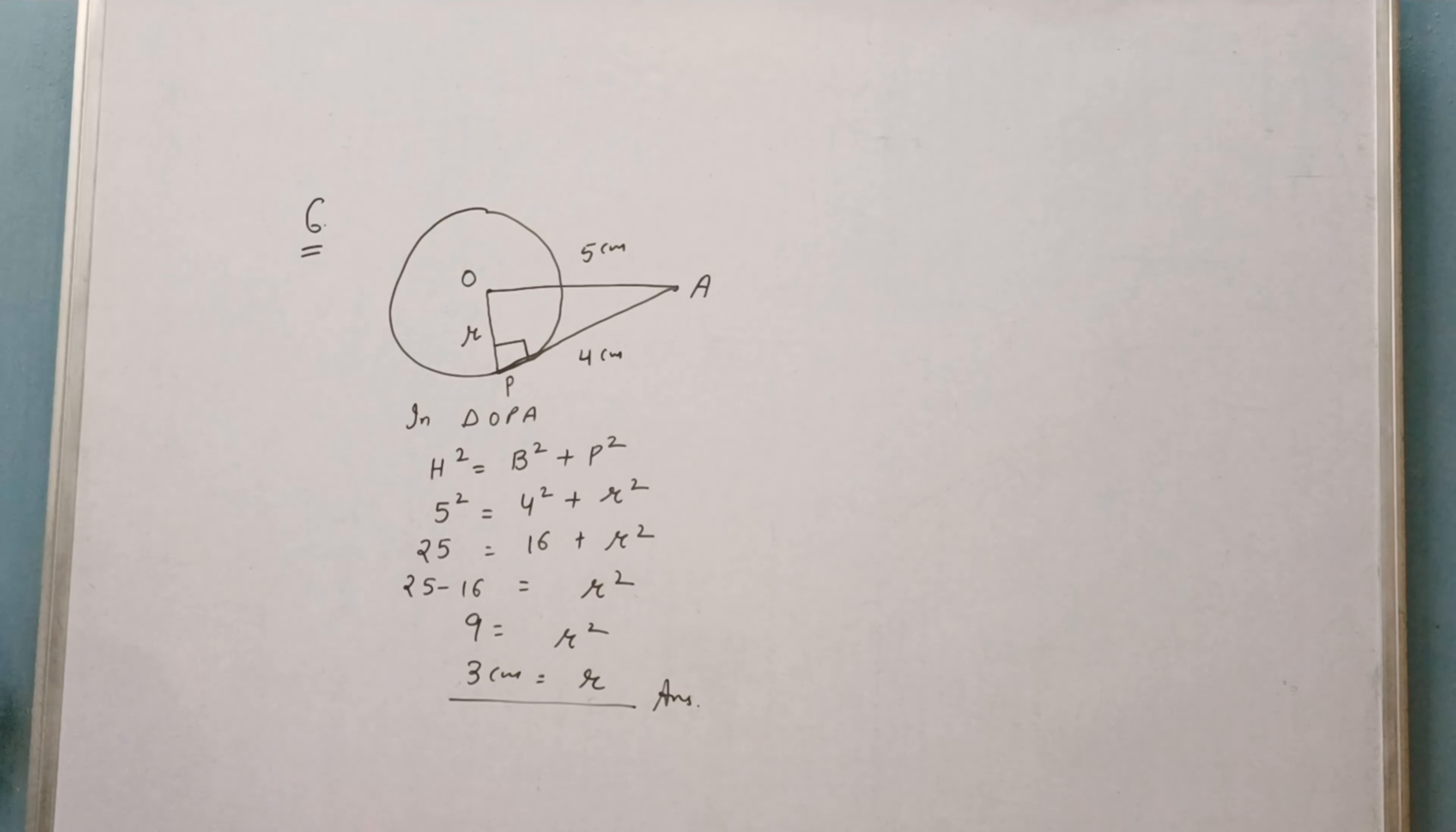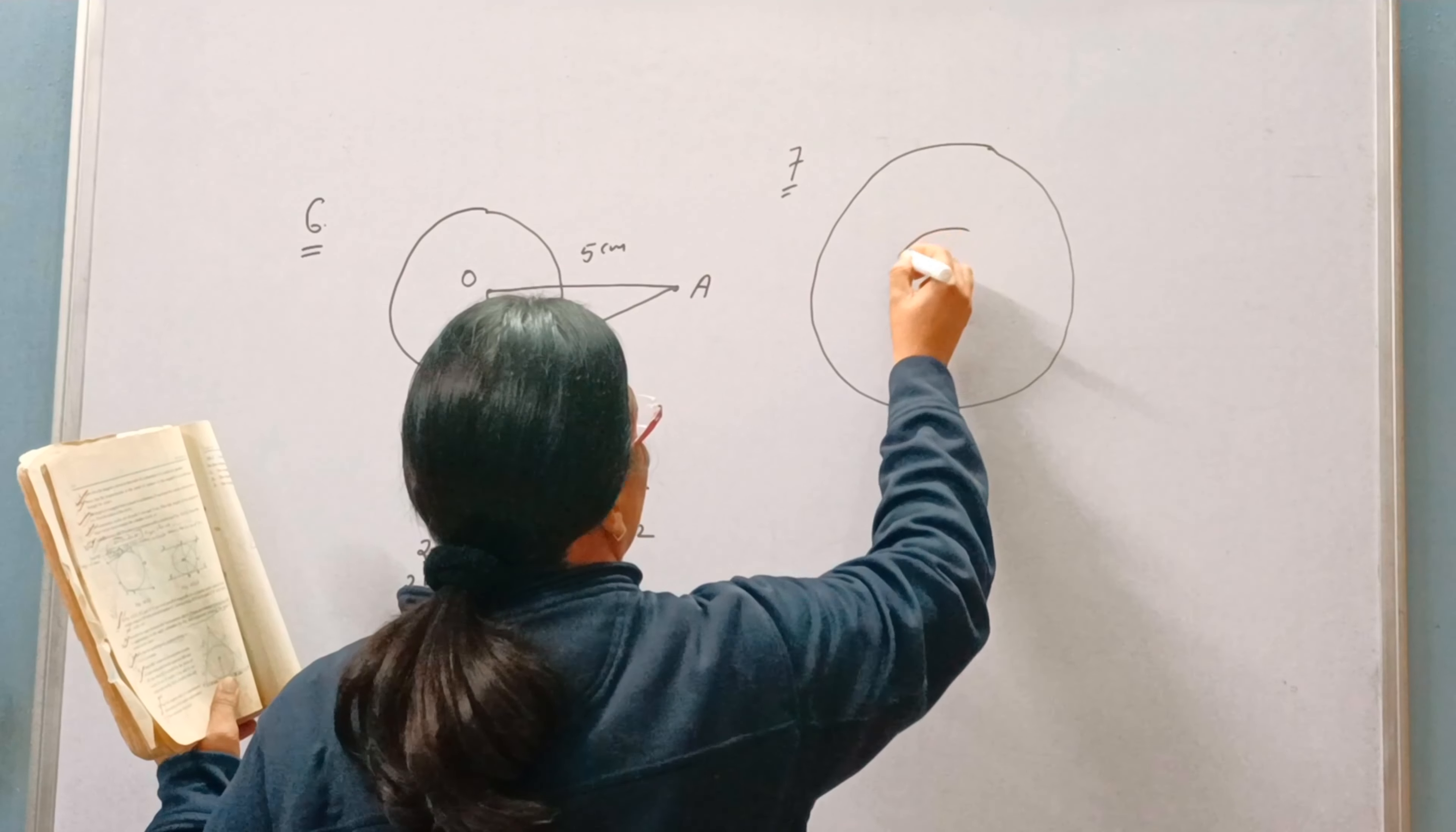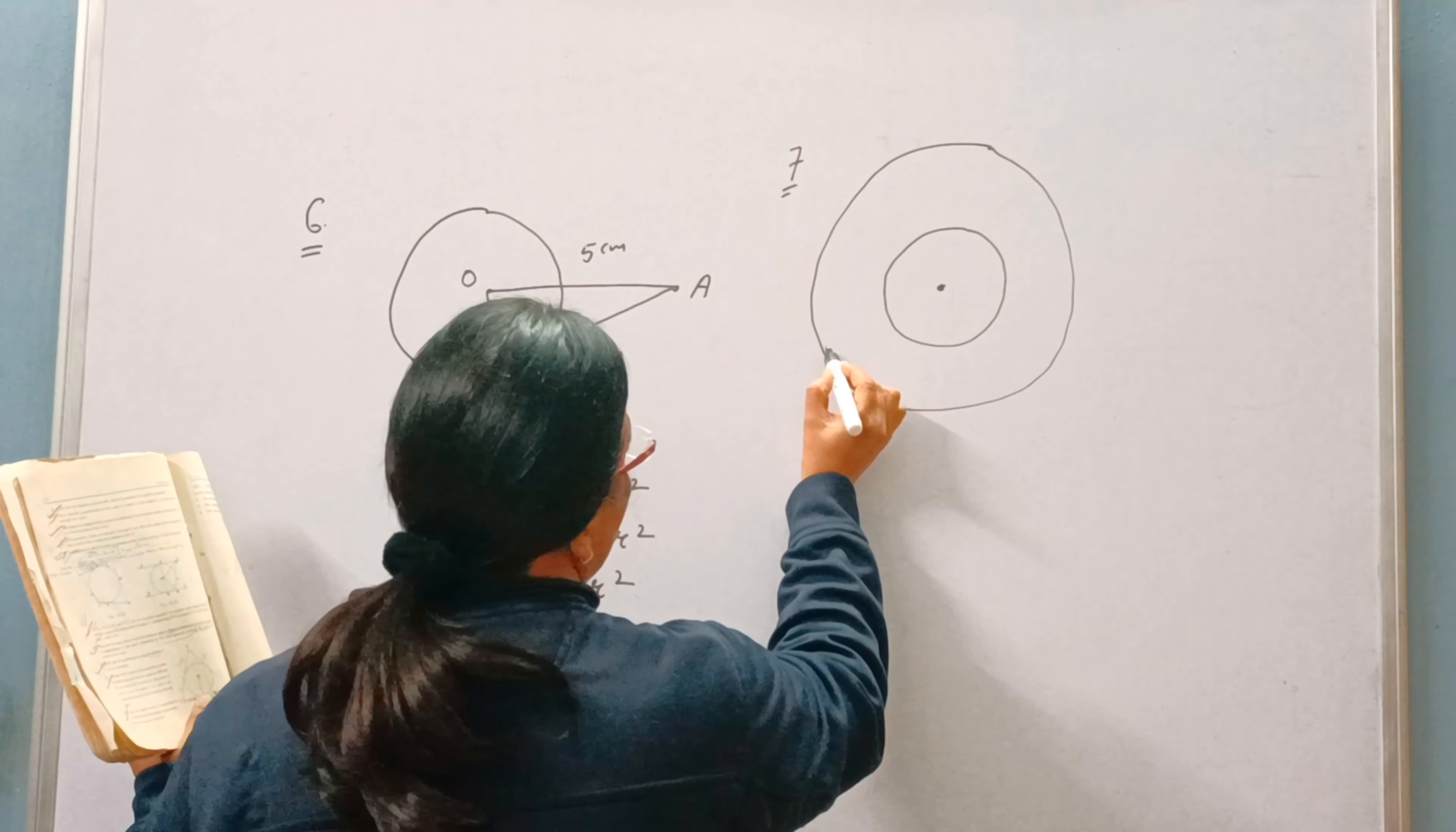Now we will do question number 7. The question is, two concentric circles of radii 5 cm and 3 cm. Concentric means having same center. Find the length of the chord of the larger circle which touches the smaller circle.